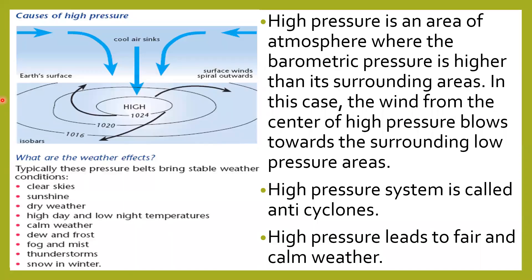High pressure is an area of the atmosphere where the barometric pressure is higher than its surrounding areas. In this case, wind from the center of high pressure blows outward towards surrounding low pressure areas. High pressure systems are called anti-cyclones. High pressure leads to fair and calm weather. The weather effects include stable conditions, very clear skies, bright sunshine, dry weather, high daytime and low nighttime temperatures, calm weather, dew and frost, fog and mist, thunderstorms, and snowy winters.